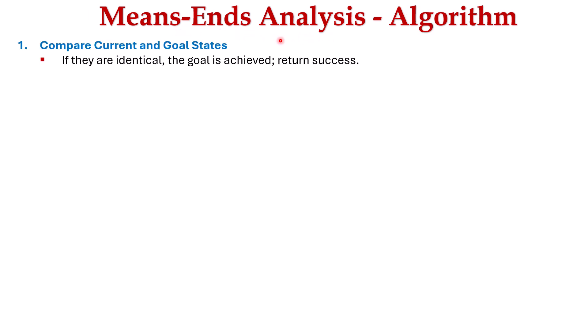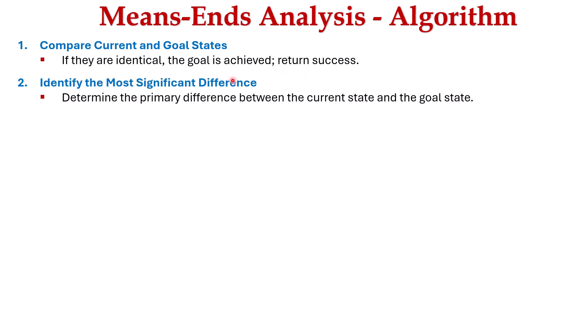Now let's look at the algorithm for means-ends analysis. The first step is to compare the current and goal state — that is, check whether they are identical. If they are identical, the goal is achieved and we return success. If they are not identical, there is a difference between the current state and goal state. In the second step, we identify the most significant difference between the current state and goal state.